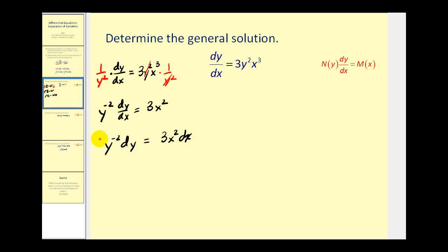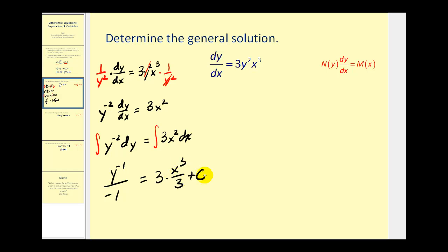Now we'll integrate both sides of the equation. The anti-derivative of y to the negative two is going to be y to the negative one divided by negative one, and this is going to equal three times x to the third over three plus c. Cleaning this up, we get negative one over y equals x cubed plus c.